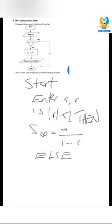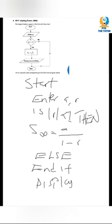Then else end if, display sum to infinity, and stop. That's how you work out this type of question. Take note of the forward slash to represent division and the star to represent multiplication. Thank you so much — don't forget to subscribe and share. I'm PBS the Tutor — see you in the next video.